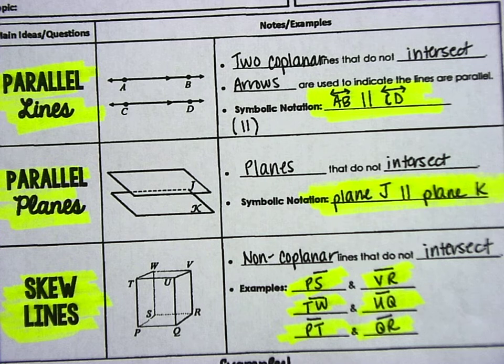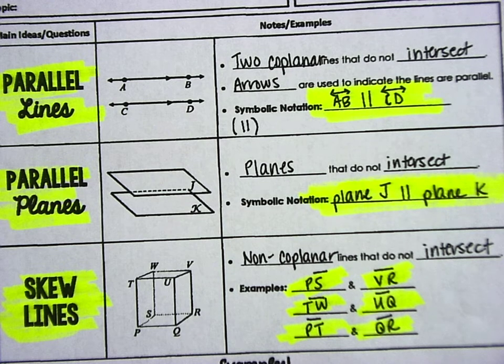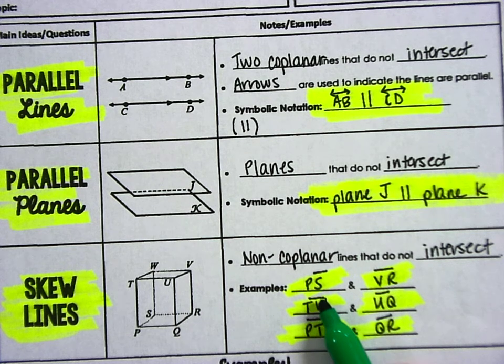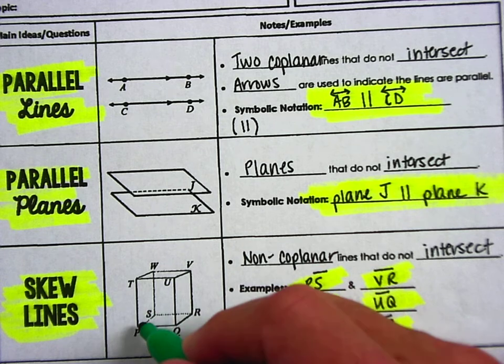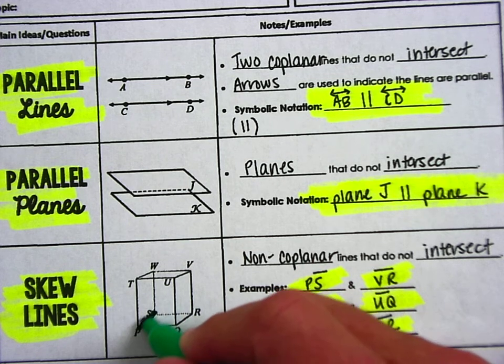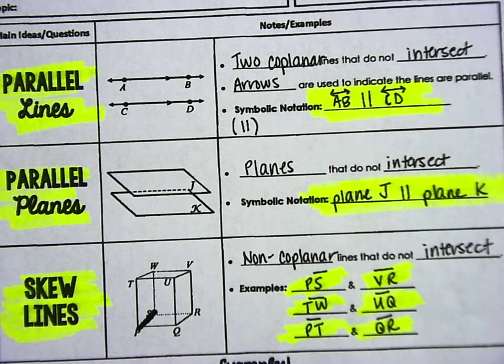Okay, finally, skew lines. They also, like parallel, do not intersect. But they are not in the same plane. So I'm just going to highlight that very first one because it'll be easy for you to see. See how it says segment PS right here? Well, look, segment PS is this little segment right here, and it's kind of coming out at us, right?